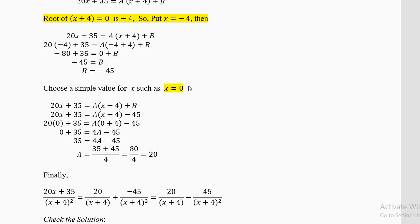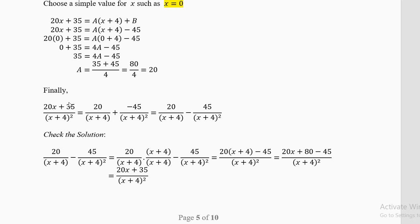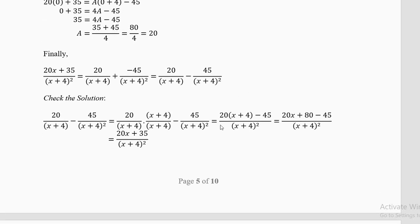Any value of x other than −4 works to find A — you can put x = 0, 1, 2, or any simple number. Do not put x = −4 again because it gives the already-known result −45 = −45 with no new information. So the partial fractions are 20/(x + 4) minus 45/(x + 4)², which can be verified by summing the two fractions.